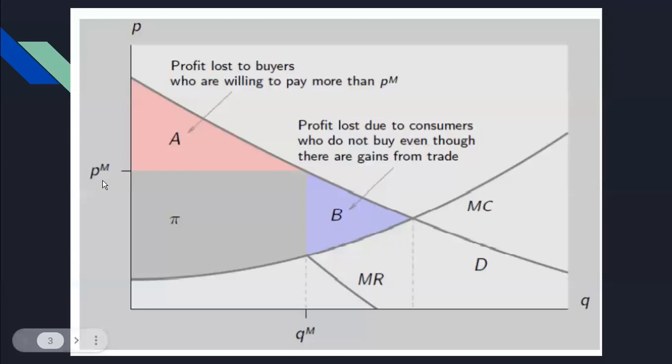The blue area is below the equilibrium price — consumers here could still afford to pay. This means by selling at a higher price to consumers whose willingness to pay is higher, and at a lower price to those whose willingness to pay is lower, price discrimination allows sellers to capture more profit.